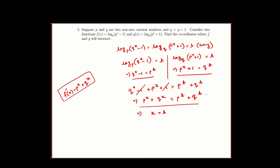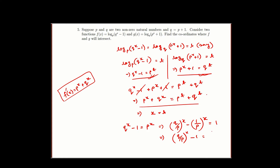Substituting t back into one of the two equations, we get q^(x−1) equal to p^x. We can write this as (q/p)^(x−1) times (1/p)^(x−1) ... rearranging, we write it as (q/p)^(x−1) equal to (1/p)^x, bringing terms to either side to get the equation equal to 1.